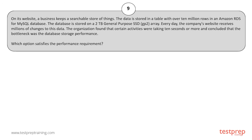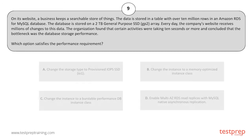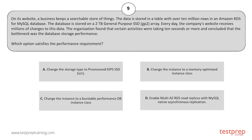Your options are: A. Change the storage type to provisioned IOPS SSD. B. Change the instance to a memory-optimized instance class. C. Change the instance to a burstable performance DB instance class. D. Enable Multi-AZ RDS Read Replicas with MySQL Native Asynchronous Replication.